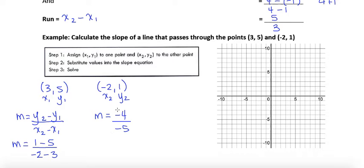So I'm going to simplify that. 1 take away 5 is negative 4. And negative 2 take away 3 is negative 5. If the numbers on the numerator and the denominator are both negatives, then you can simplify this as 4 over 5. This tells us we have a positive slope of 4 over 5.